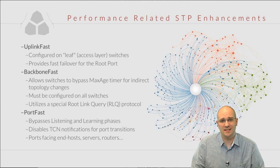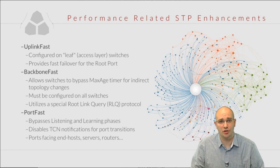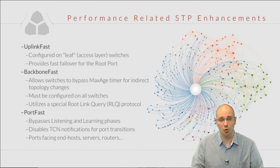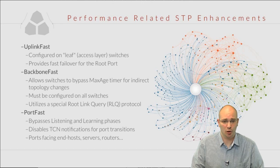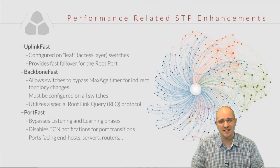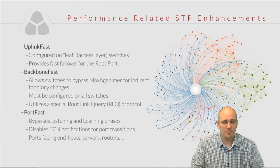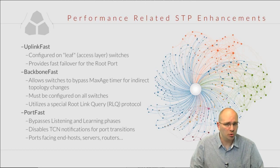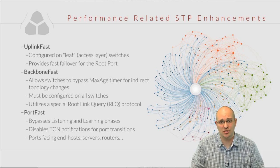Finally, port fast is a feature that is designed to be configured on the ports facing end hosts, like computers, servers, routers, or maybe other switches — in a case that we are 500% sure there are not going to be any loops. What port fast does is allow a port to bypass the initial listening and learning phases when it transitions from the disabled state. That means that when the port comes out of no shutdown, it is going to start forwarding traffic immediately. Also, port fast disables generation of TCN BPDUs in a case of a topology change on the port with port fast enabled.